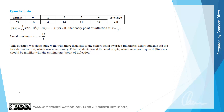From the examiner's report, 54% of students got that question correct, and the examiner notes it was done quite well with more than half the cohort awarded full marks. The examiner also says students should be familiar with the terminology 'point of inflection,' noting that a number of students didn't know how to categorize the stationary point at x equals 1/2 as a stationary point of inflection.